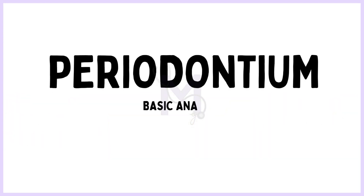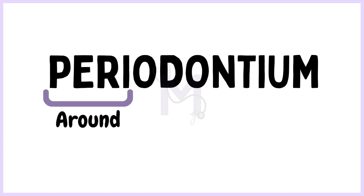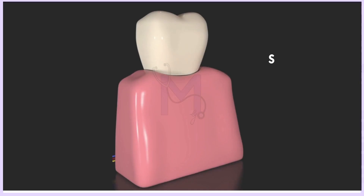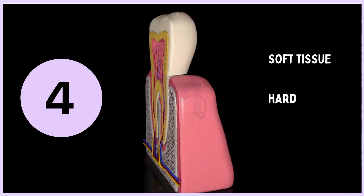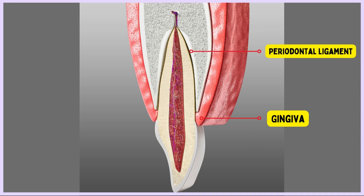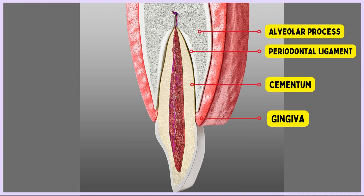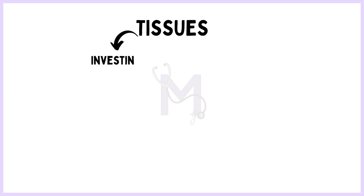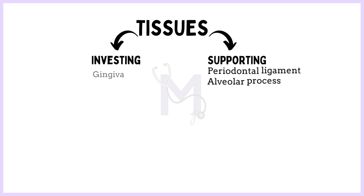Before diving into the disease, let us understand the basic anatomy of the periodontium. 'Peri' means around and 'odont' means tooth. And therefore, periodontium encompasses four different soft tissues and hard tissues: gingiva, periodontal ligament, alveolar process and the cementum. By definition, the tissues investing and supporting the teeth are defined as the periodontium.